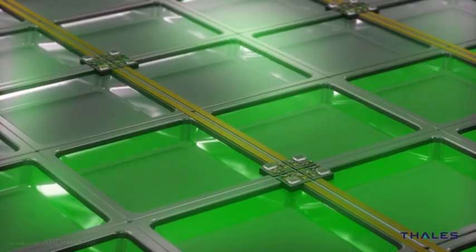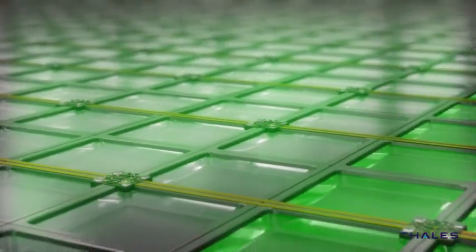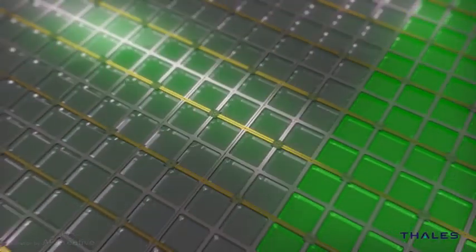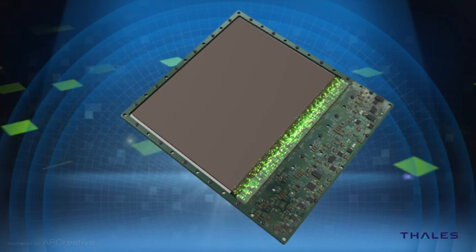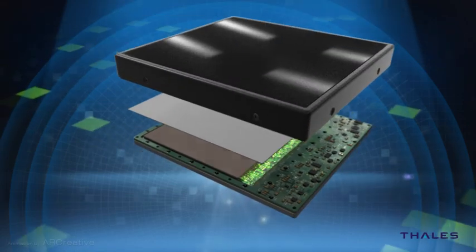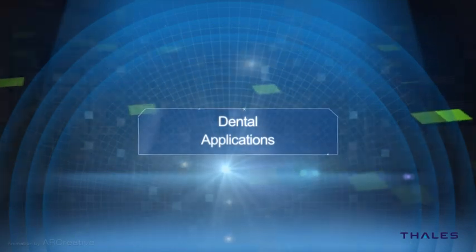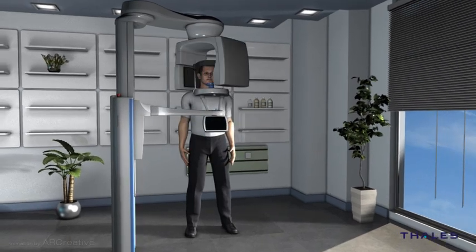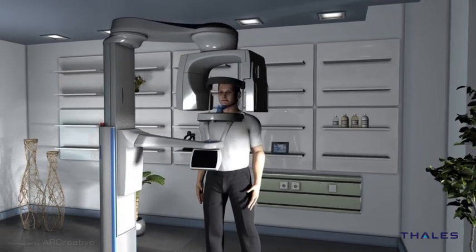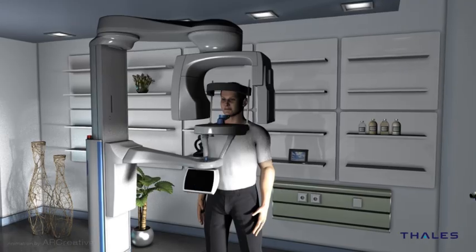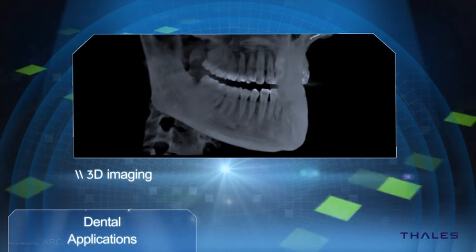During the readout phase, the electrons flow to the pixel's capacitor. Signals from the pixels are transmitted sequentially and in a synchronized manner to the readout electronics.